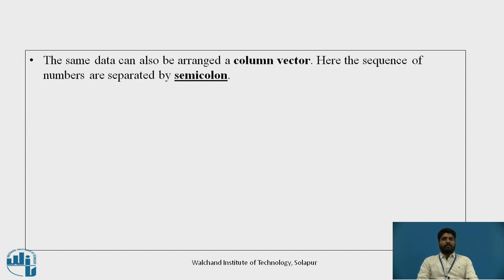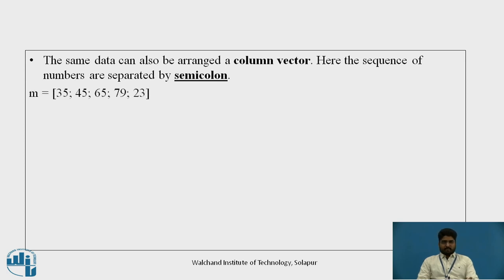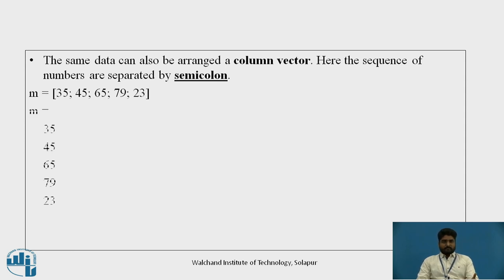In the same way, the same data can also be arranged in a column vector. The sequence of numbers are separated by a semicolon. The elements are: 35; 45; 65; 79; 23. The vector we get is a column vector — that is, in one column.